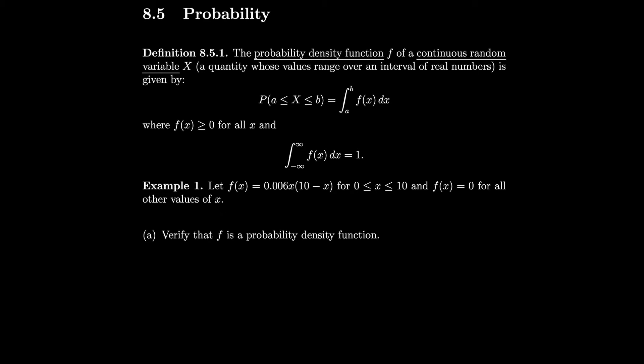Section 8.5: Probability. The probability density function f of a continuous random variable capital X, a quantity whose values range over an interval of real numbers, is given by the probability of capital X being between a and b as the integral from a to b of f of x dx, where f is some positive function and the integral of f from minus infinity to infinity is 1.